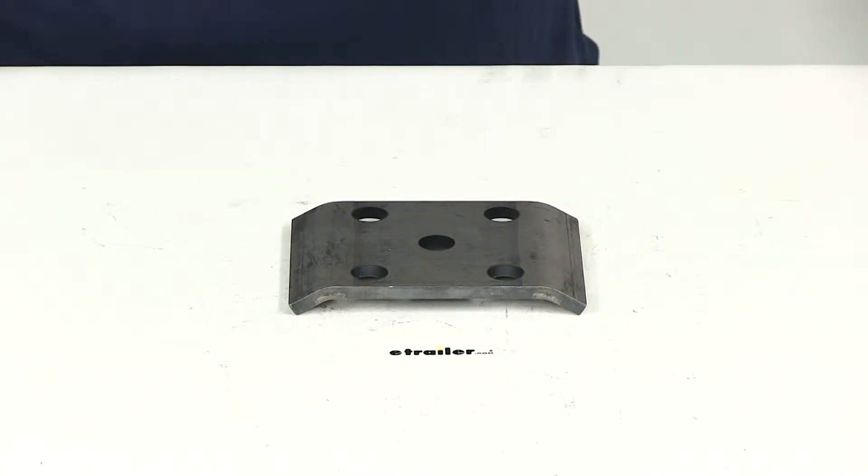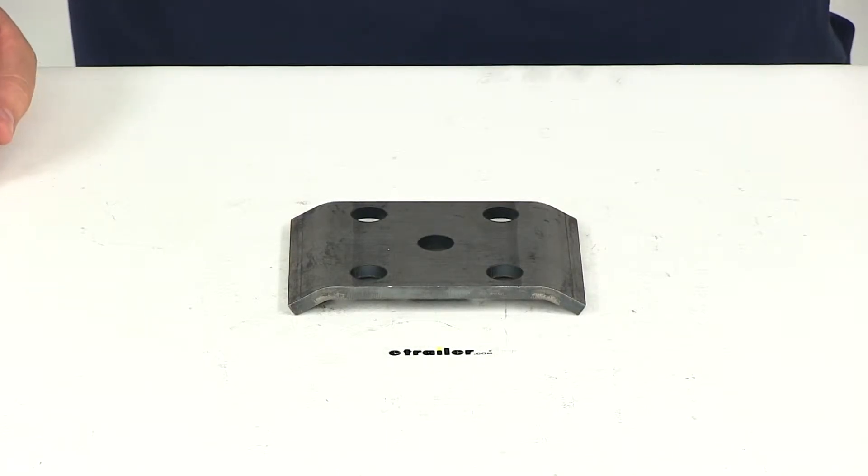Today we'll be reviewing part number 116308. This is Redline's U-bolt plate for one and three quarter inch square trailer axles with one and three quarter inch wide springs.